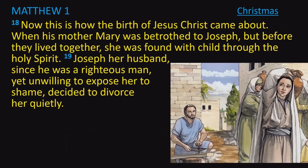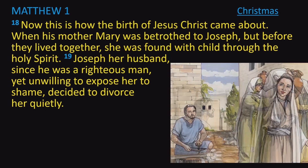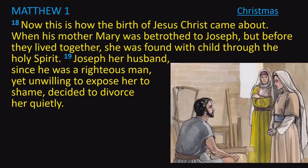The reading continues at verse 18 where Matthew tells about the birth of Jesus. Now this is how the birth of Jesus Christ came about. When his mother Mary was betrothed to Joseph, but before they lived together, she was found with child through the Holy Spirit. Joseph, her husband, since he was a righteous man, yet unwilling to expose her to shame, decided to divorce her quietly.